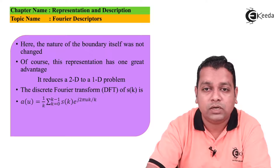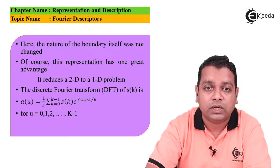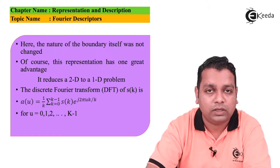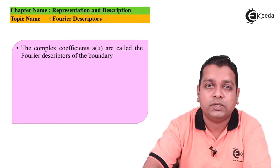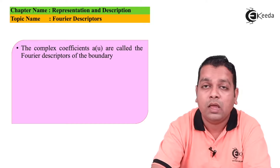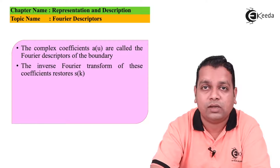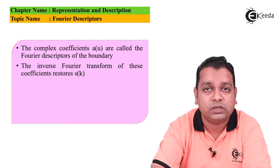where u, representing the transform domain, ranges from 0, 1, 2, ..., K-1. The complex coefficients a(u) in the transform domain are called the Fourier descriptors of the boundary. The inverse Fourier transform of these coefficients is also possible, restoring s(k).